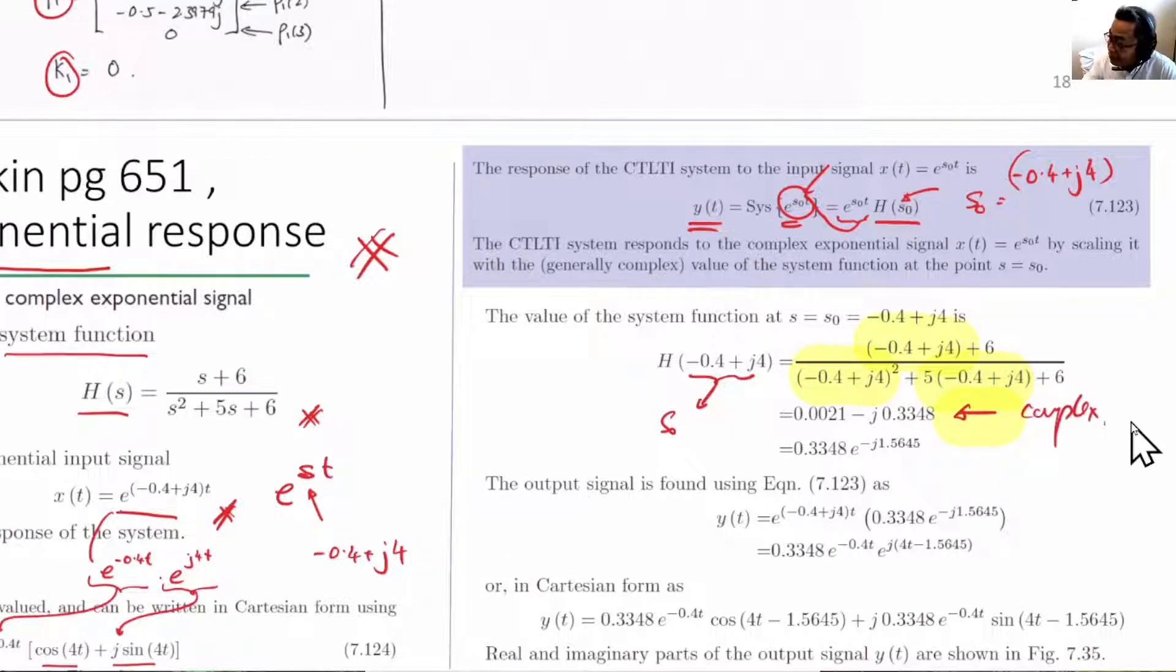In rectangular form, and then we convert it into the polar form, or the complex exponential form, showing the magnitude and the phase.